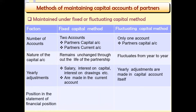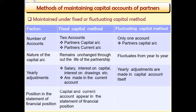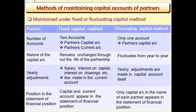Regarding position in the statement of financial position: under the fixed capital method, both the capital account and current account appear in the statement of financial position. Under the fluctuating capital method, only the capital account appears — under the name of each partner — and the current account does not appear.